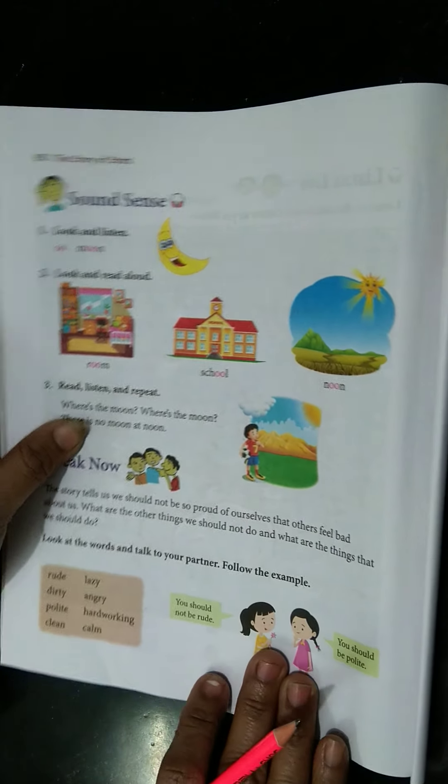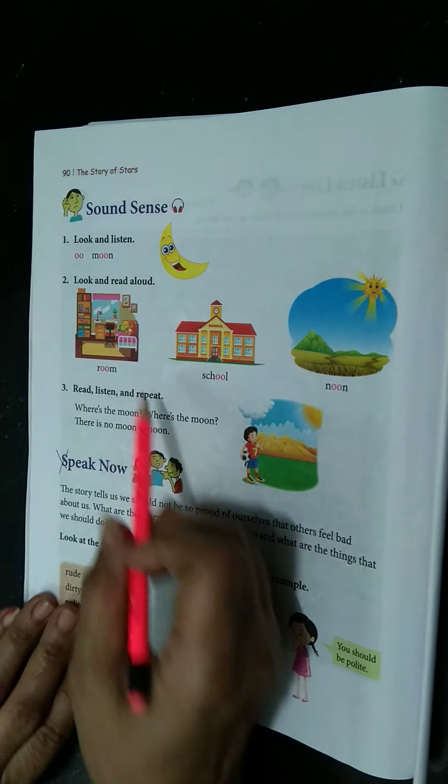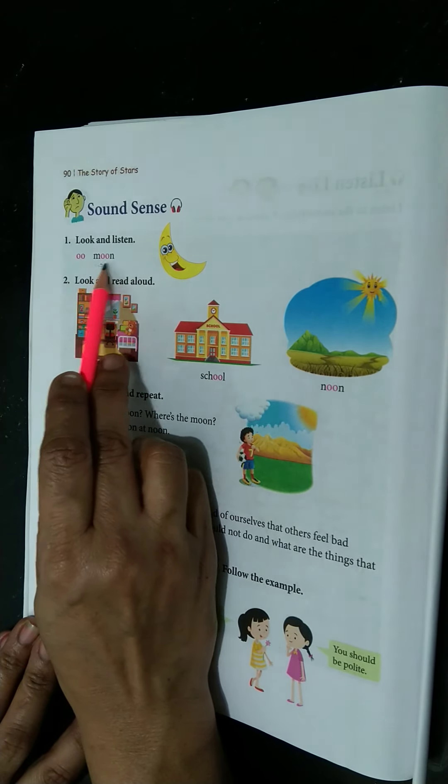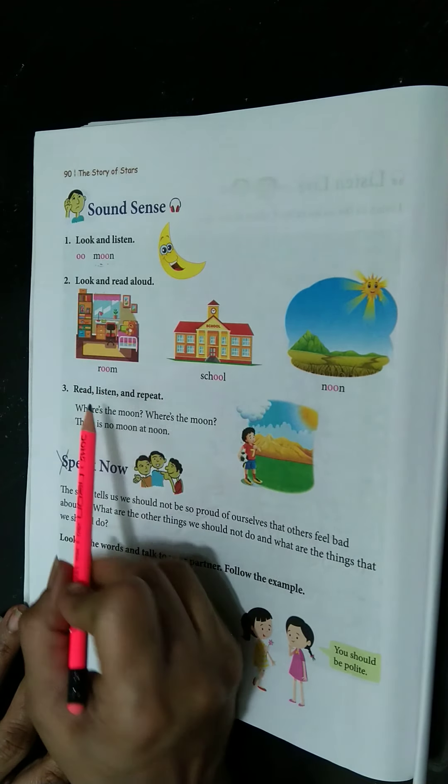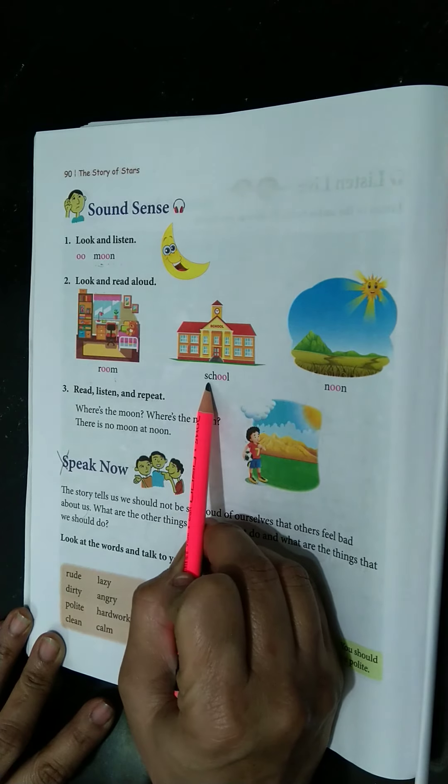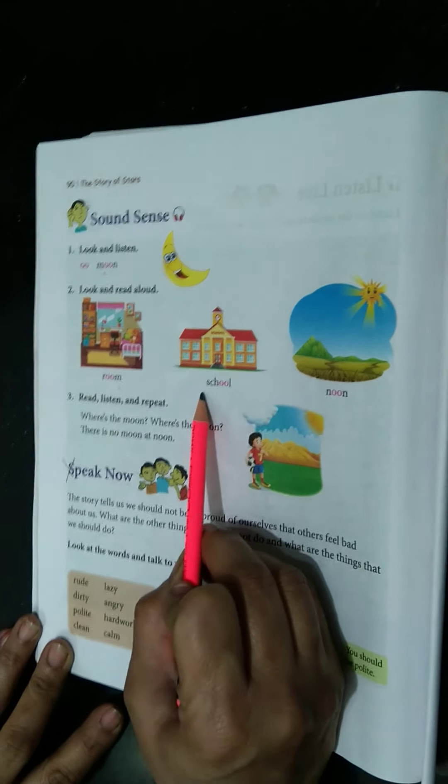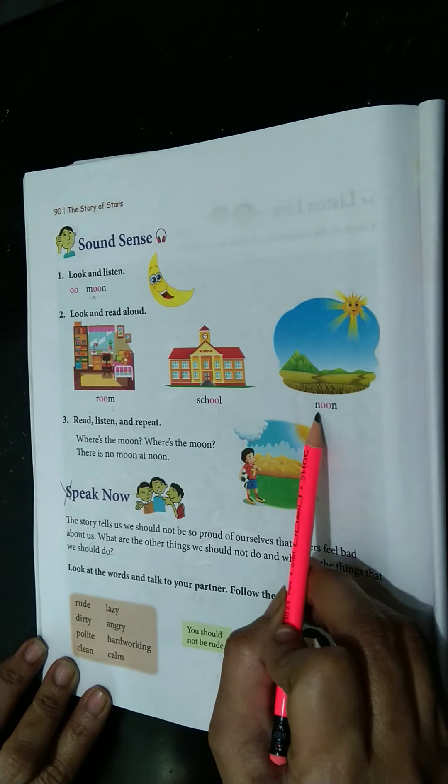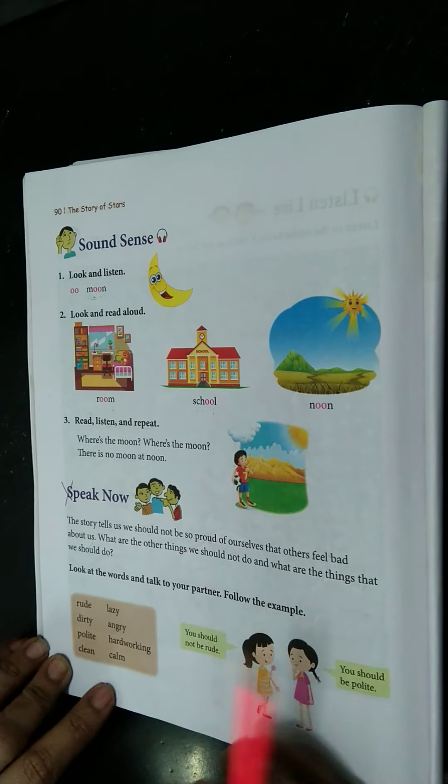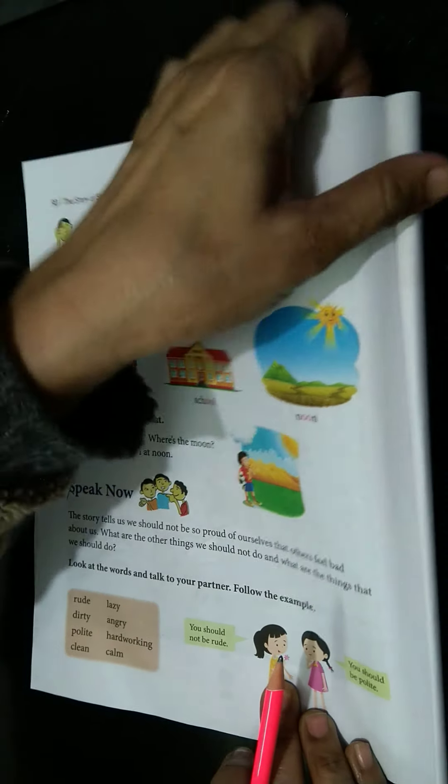Sound sense. Look and listen. Moon, M-O-O-N, moon. Look and read aloud. R-O-O-M, room. S-C-H-O-O-L, school. Moon, N-O-O-N, noon. Okay, then we will turn the page.